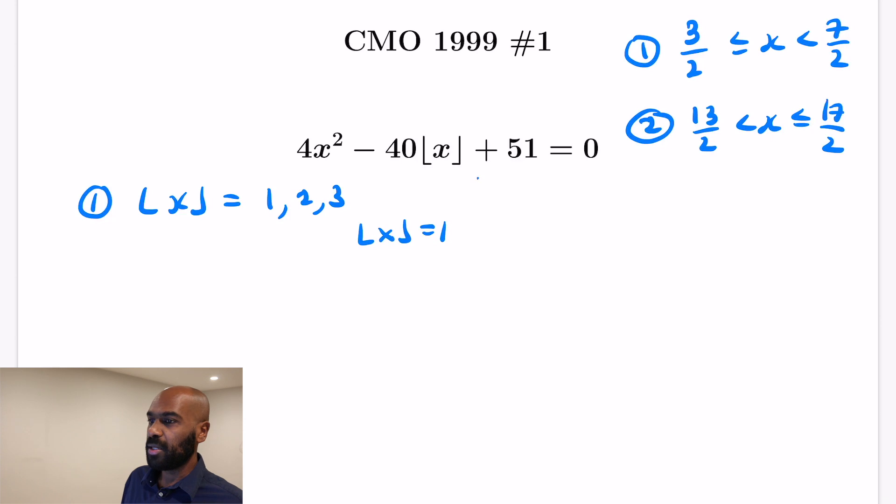If the floor of x is 1, then our equation becomes 4x² - 40 + 51 = 0, so 4x² + 51 = 40. But if we rearrange that, that would make 4x² a negative number, and that's not possible since we're solving for real values of x. So that rules out the case that the floor of x can be 1.